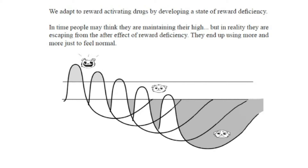So what happens when the substance wears off — the dynorphin levels are high, the dopamine levels are low, and the person crashes.